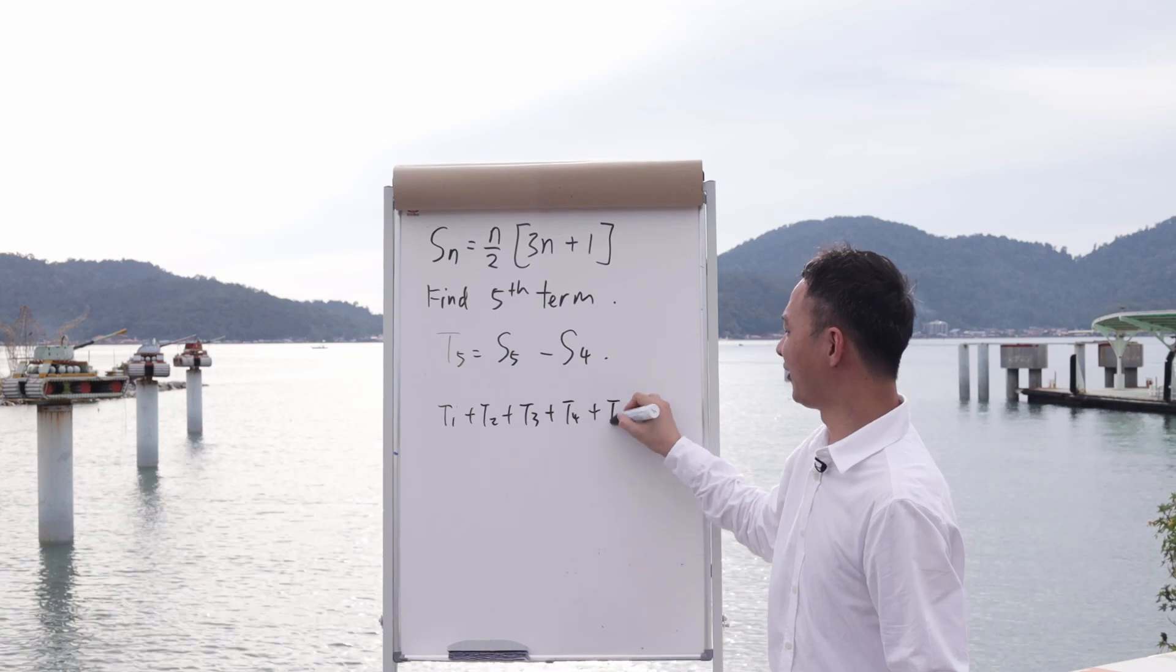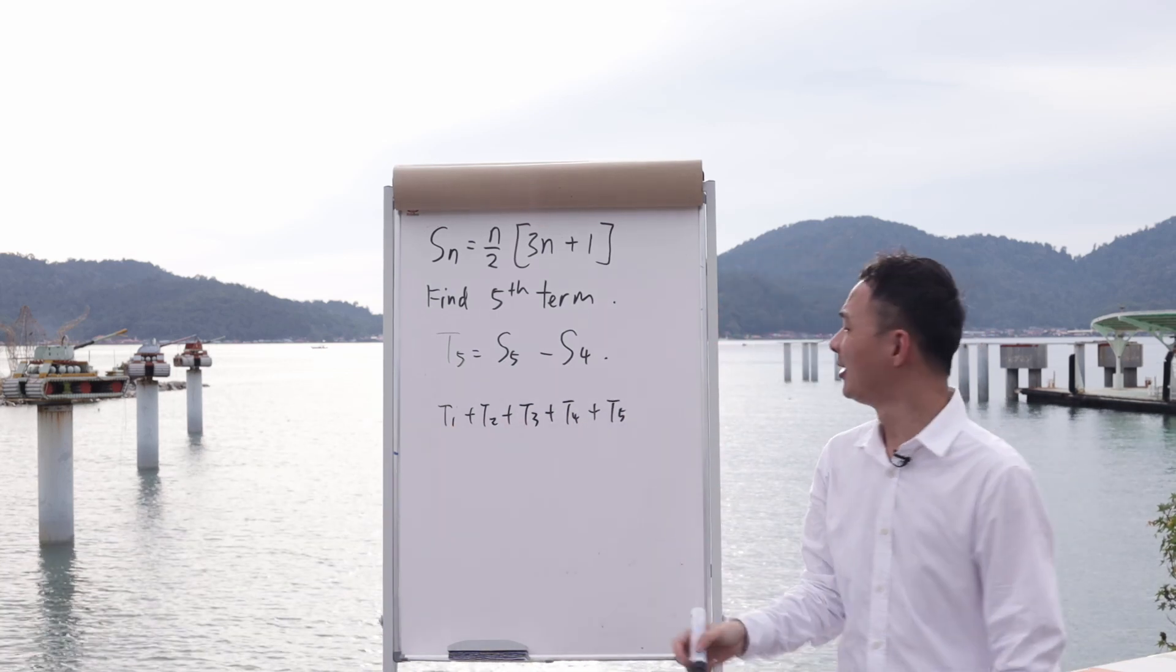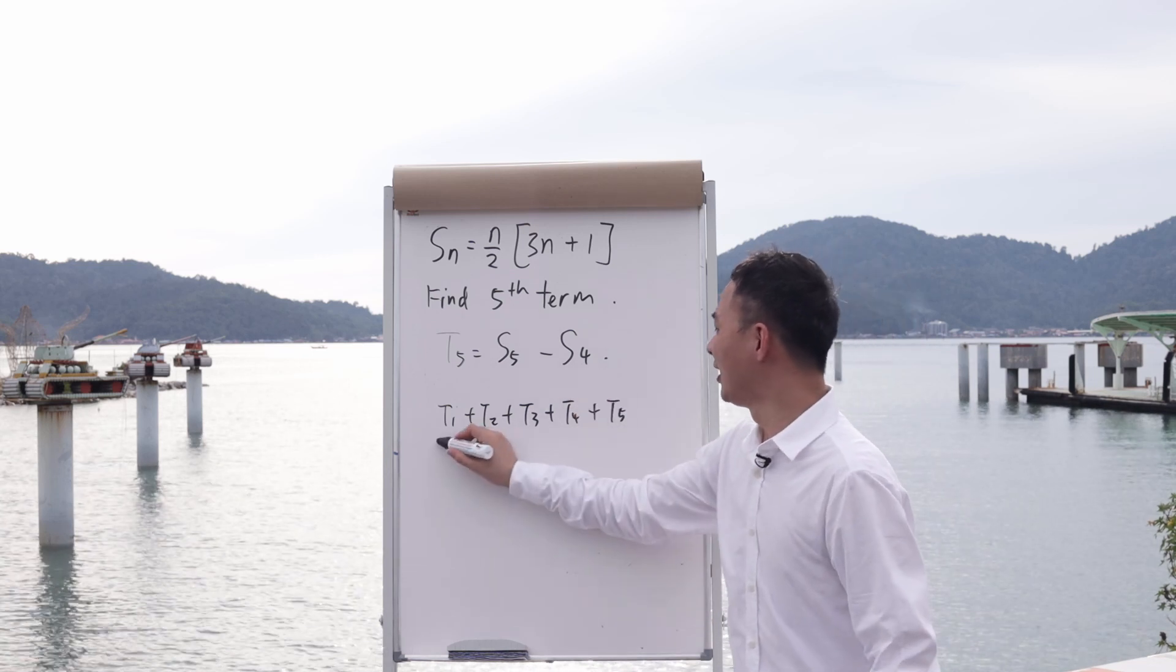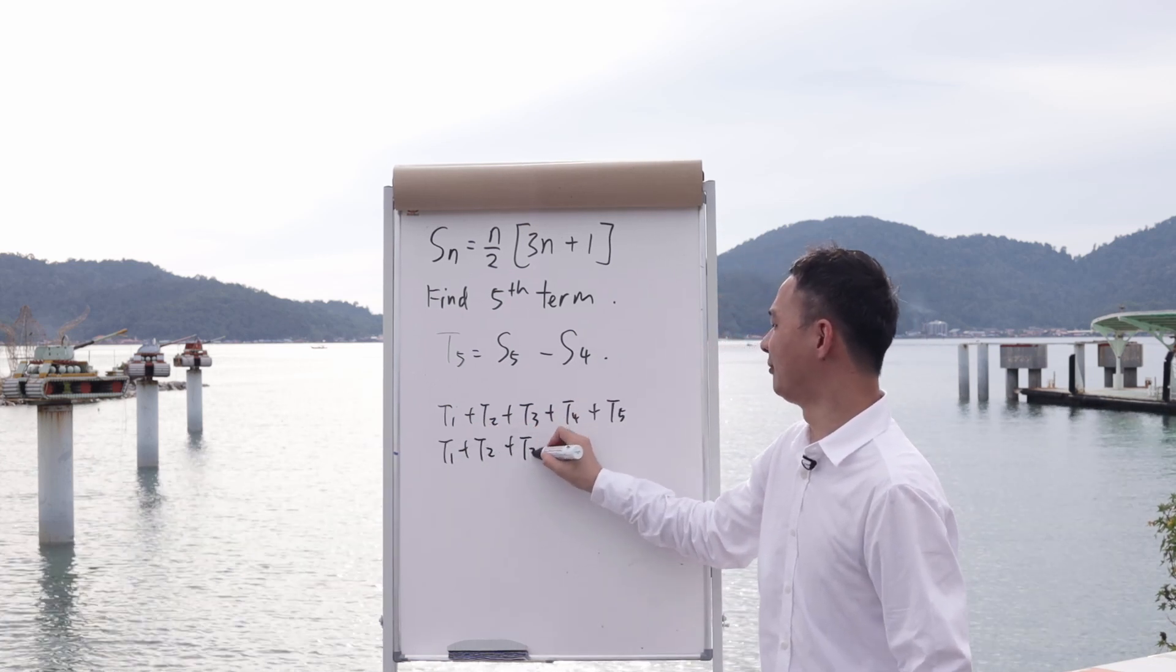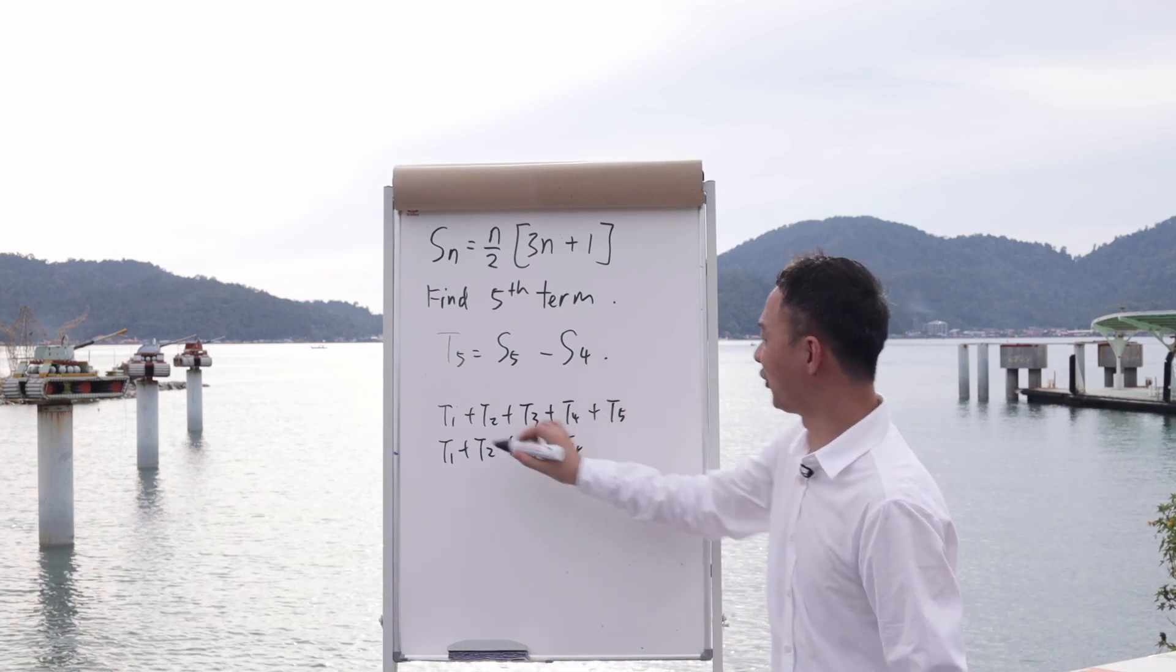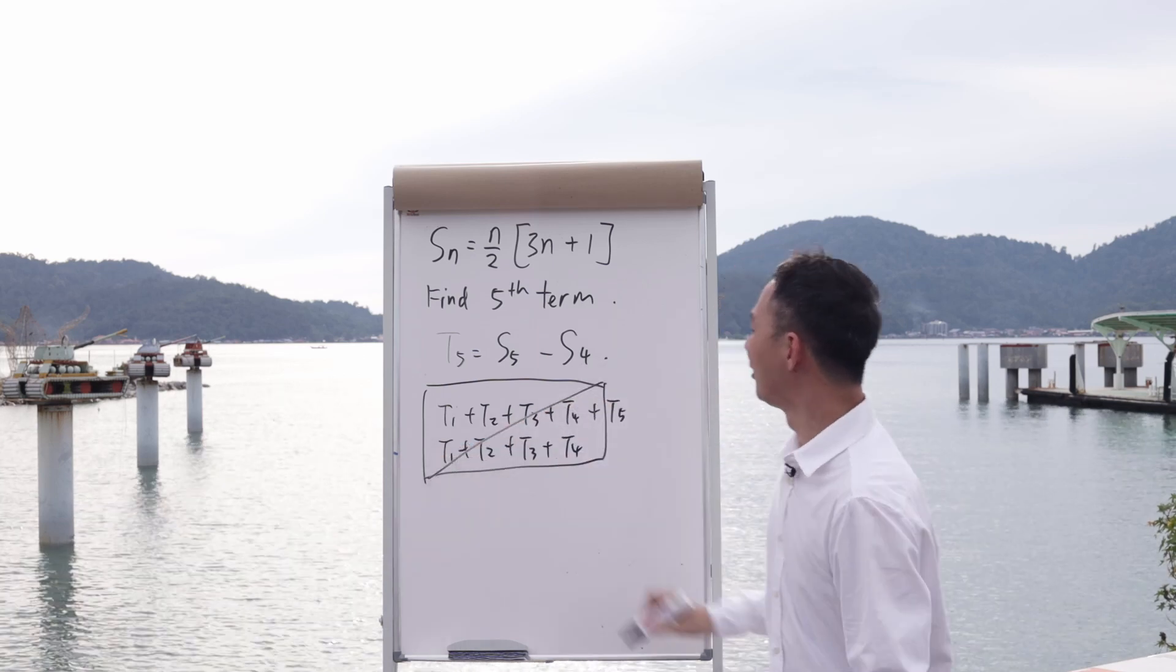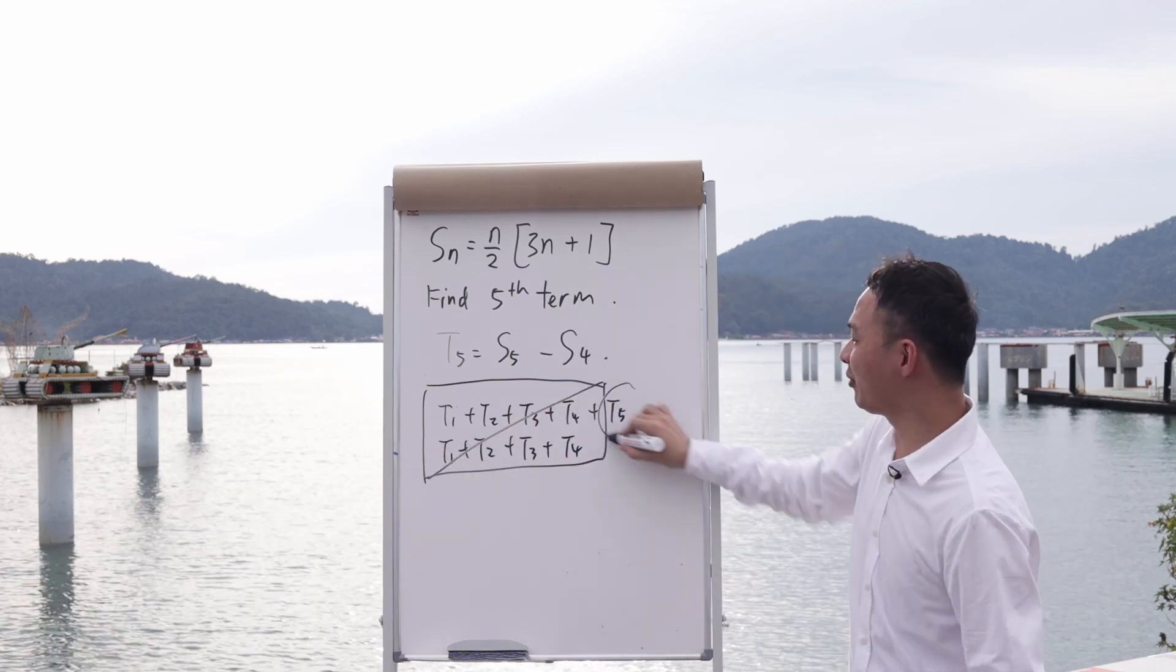When you do s4, it's the first term plus second term plus third term up to the fourth term. So if you subtract s4 from s5, the first to fourth terms all cancel out, and you're only left with the fifth term.